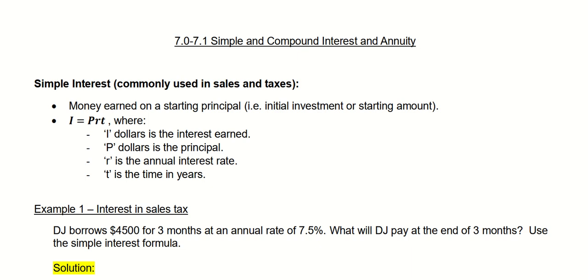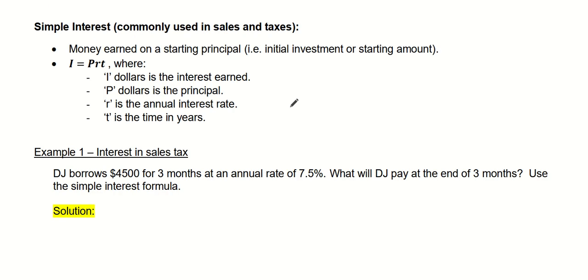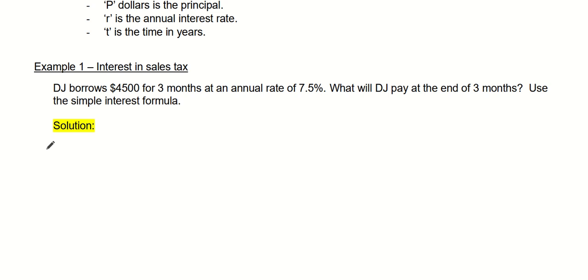In this lesson, we're going to talk about simple and compound interest and annuity. We should talk about simple interest first. It's the money earned on a starting principal. The formula is pretty simple: it's principal multiplied by R, which is the rate, and you can multiply by time as well if there's time involved. The best way to understand is to do problems. Let's look at the first example - interest and sales tax. Use the simple interest formula because nowhere does the problem say compounding. If it says compounding, you'd use one of the other formulas.